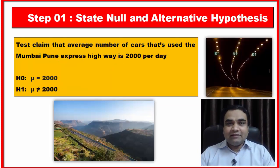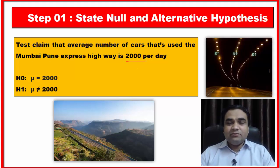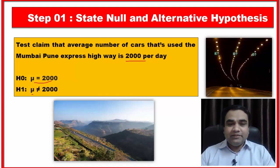Now look at the third example. Suppose the test claims that the average number of cars using the Mumbai-Pune expressway is 2000 per day. Here our null hypothesis is mu equals 2000, and the alternative hypothesis is mu is not equal to 2000.